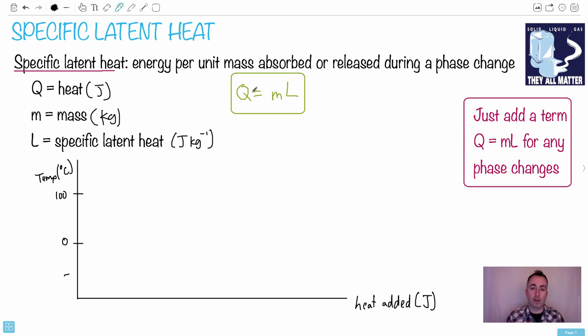Whenever you're working with these situations, if you've got a question where you've got a phase change happening and things changing temperature, then all you would have to do is add a term Q equals ML for any phase changes. For example, let's say you had tea being put into a cup, but maybe that cup also had water in it, or maybe it had ice in it.